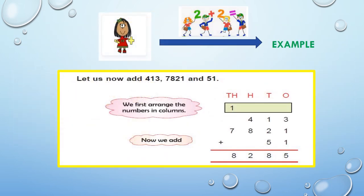Let us now add some numbers. 413, 7,821 and 51 is equal to 8,285, which is 8 thousands, 2 hundreds, 8 tens and 5 ones.